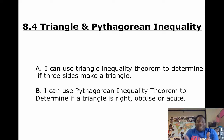Pythagorean theorem, do, re, mi. A, B, C, you and me, yeah, here we go, 8.4. So, we're gonna have two objectives here. I can use triangle inequality theorem to determine if three sides make a triangle and Pythagorean inequality theorem to determine if a triangle is right, obtuse, or acute.